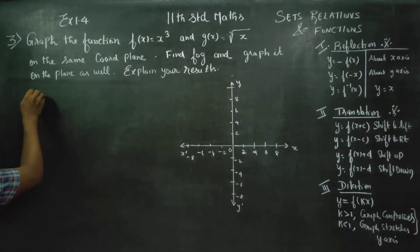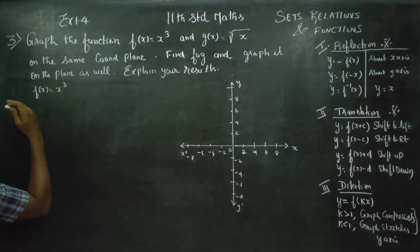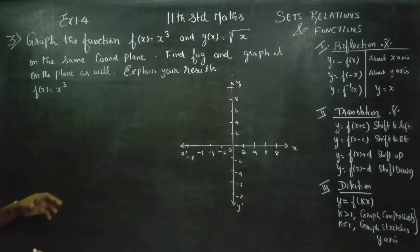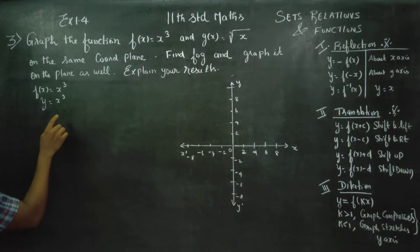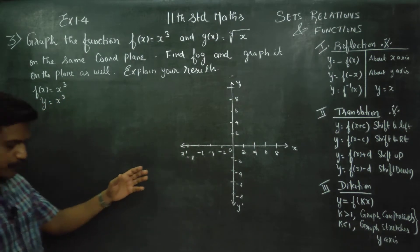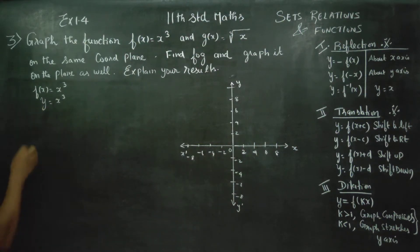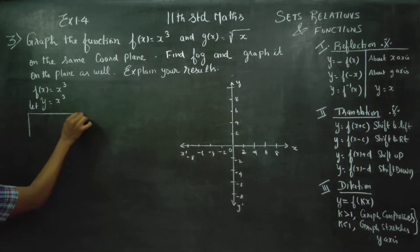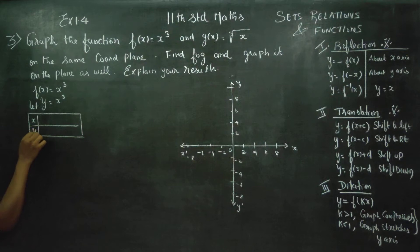First of all, f of x is equal to x cube. To draw the function as a graph, I am changing the name as y is equal to x cube, because this is the x-axis and this is the y-axis. To plot the points is easier. Just change this into y is equal to x cube. A small table with x values and y values.